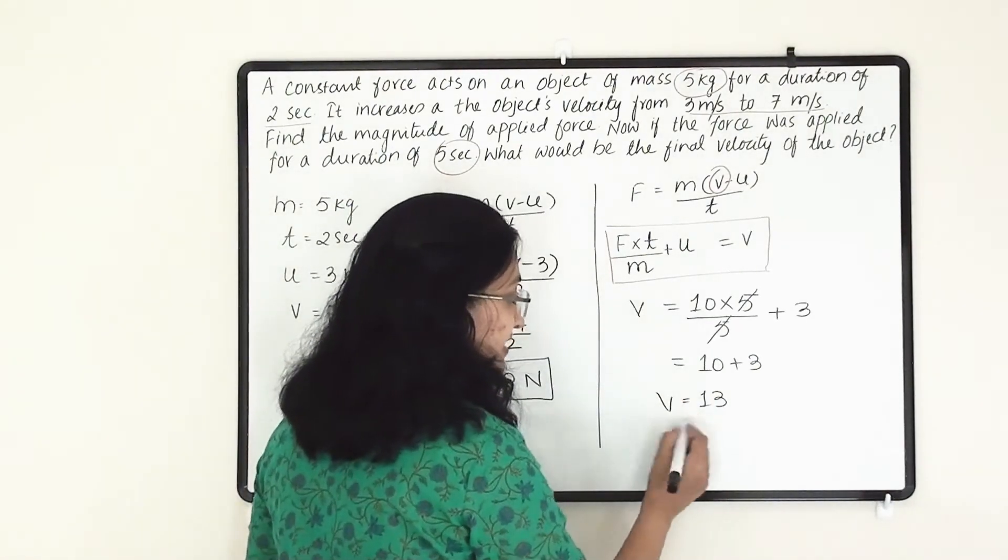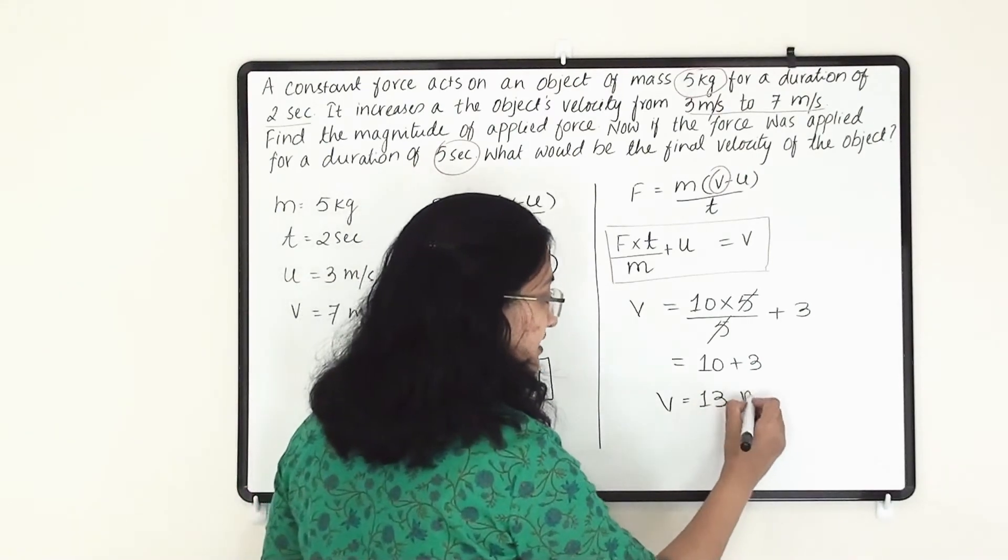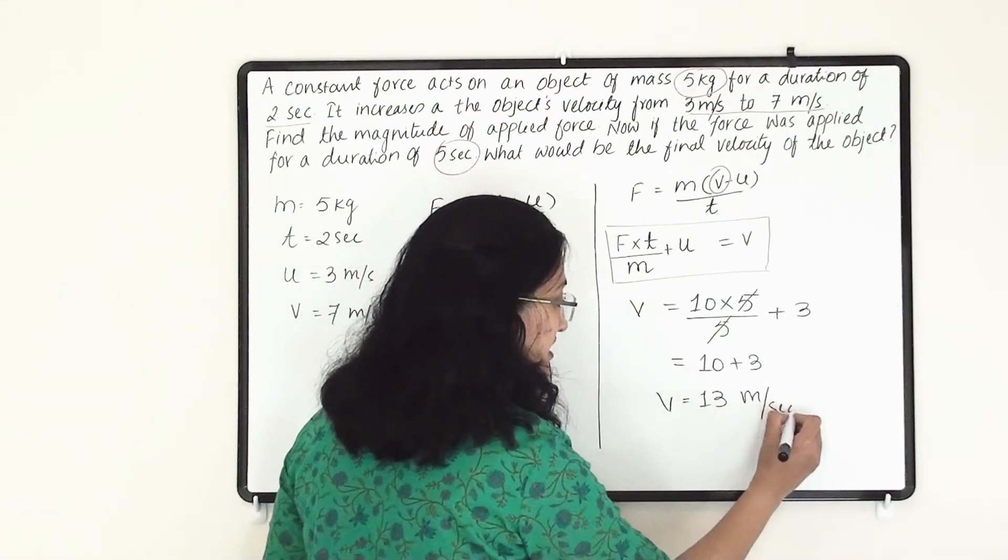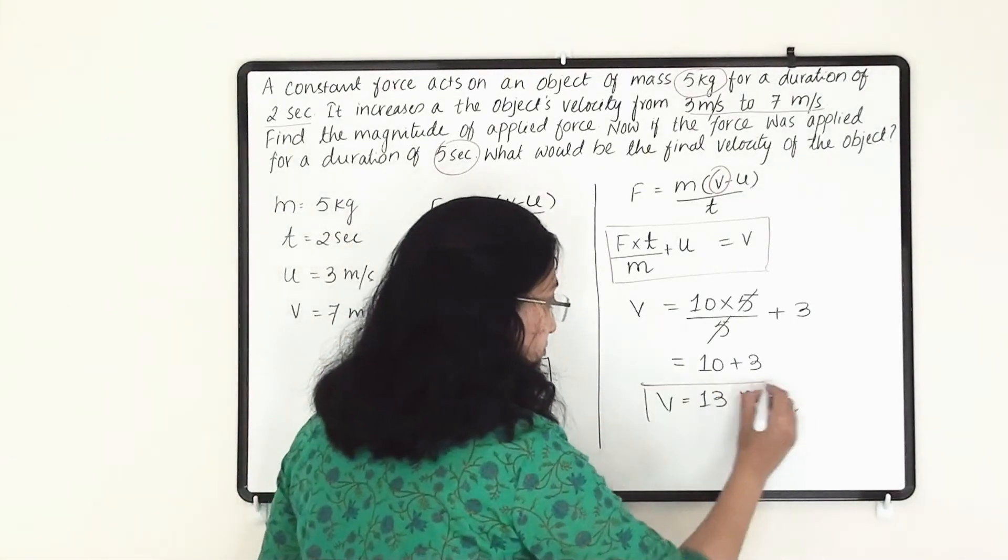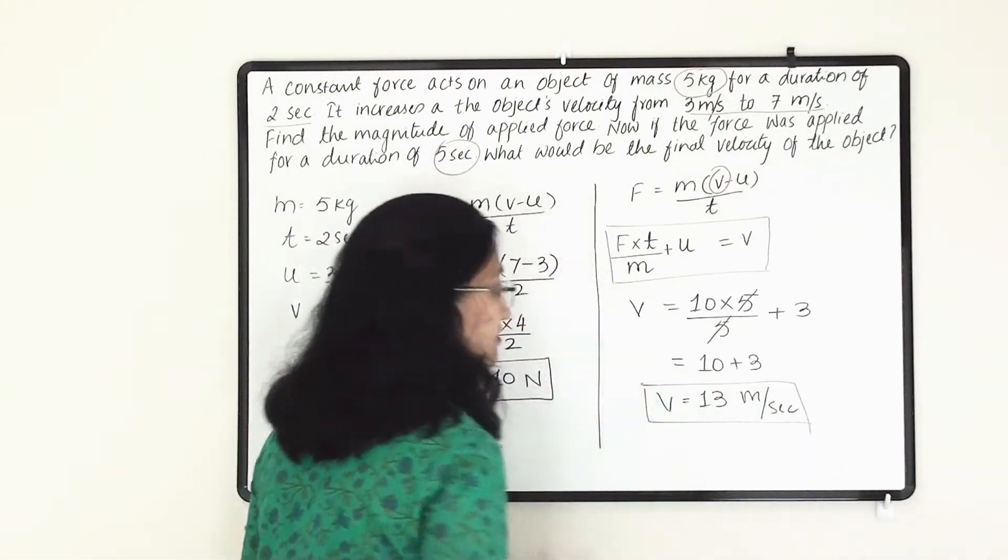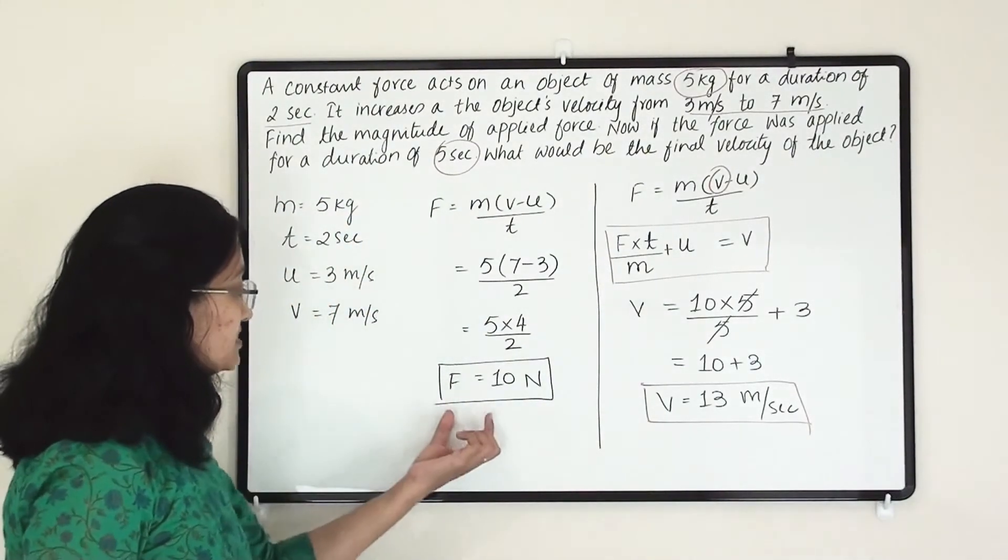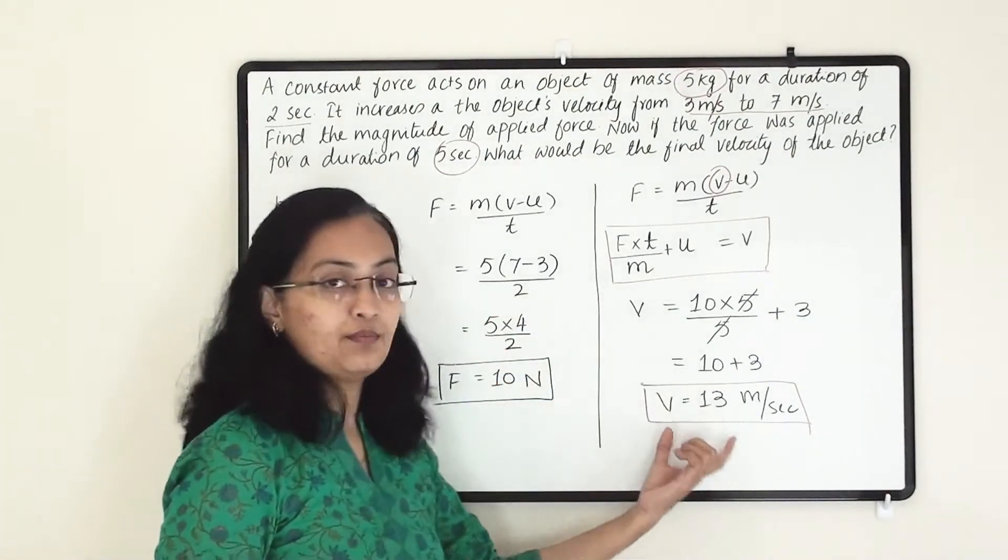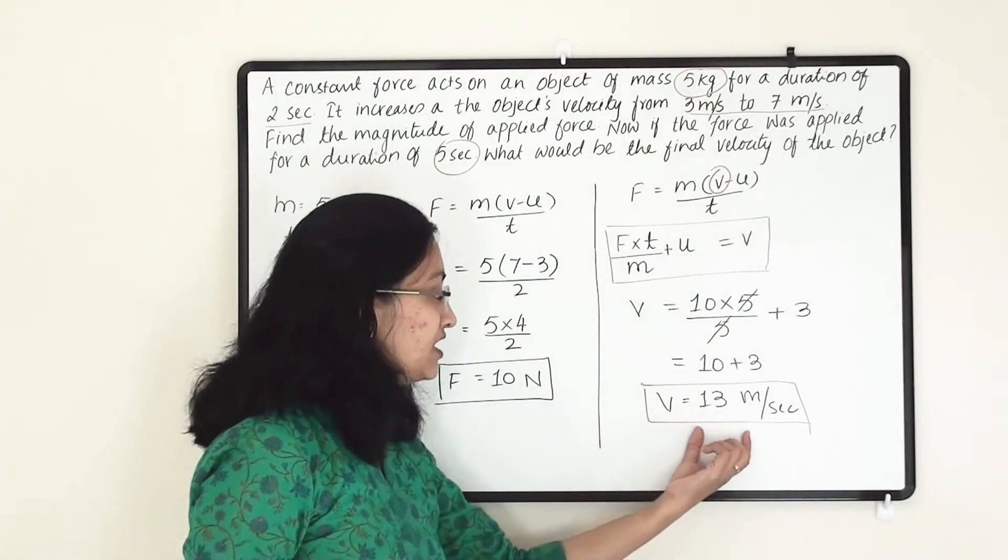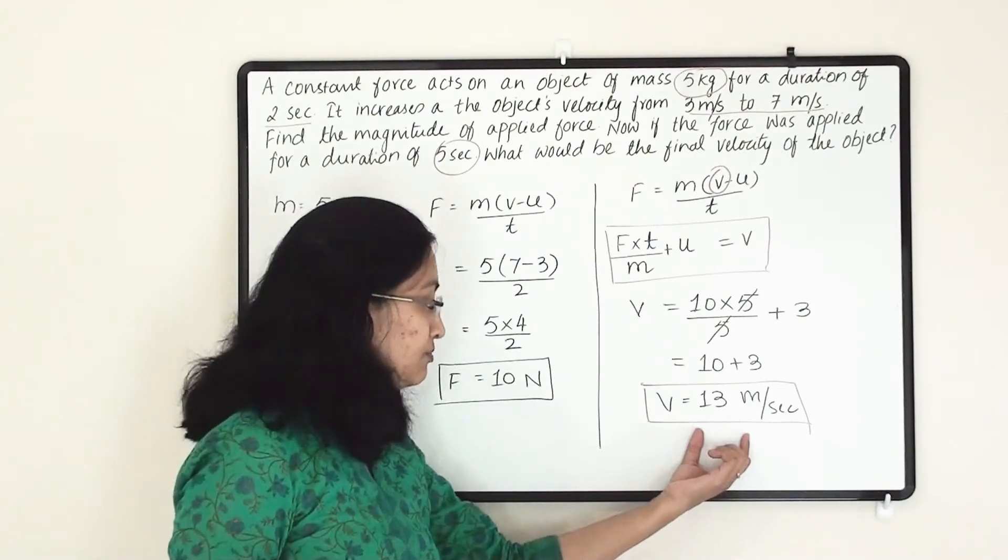So our final velocity is 13. Now what will be the unit of this 13? That is 13 meter per second, because that is a velocity. Now this is our second answer. That this answer will give us force. And same force we are applying for longer period of time, it will generate higher velocity. The final velocity will be more, and that is 13 meter per second.